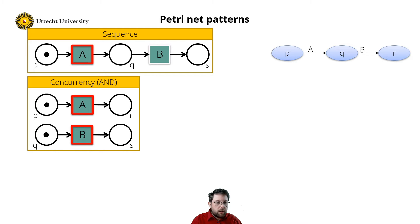The second pattern is concurrency. Two transitions can fire in random order, but need both to fire. So in this case, we are in a state with places P and Q both one token. Transition A is enabled and fires, resulting in a state where places R and Q are marked.